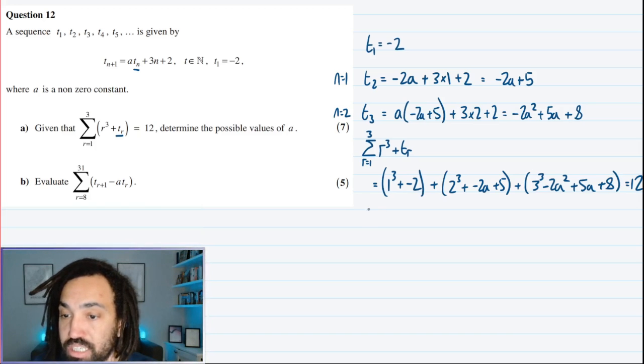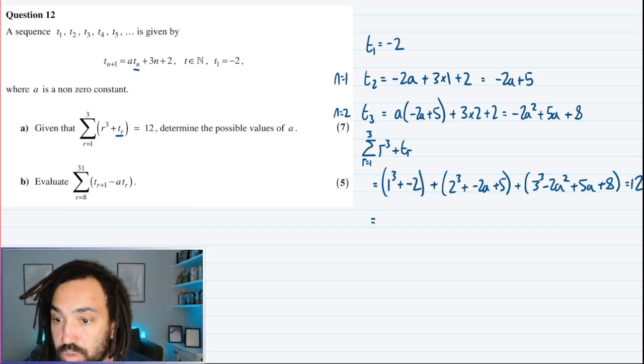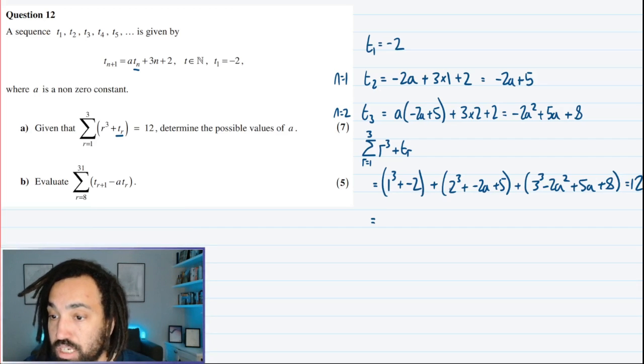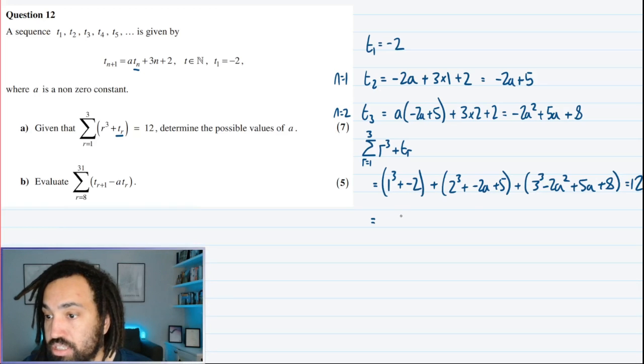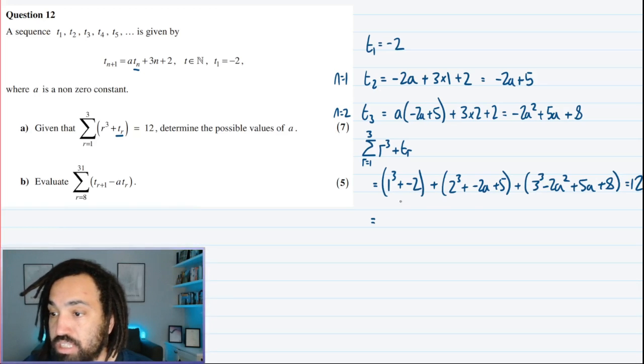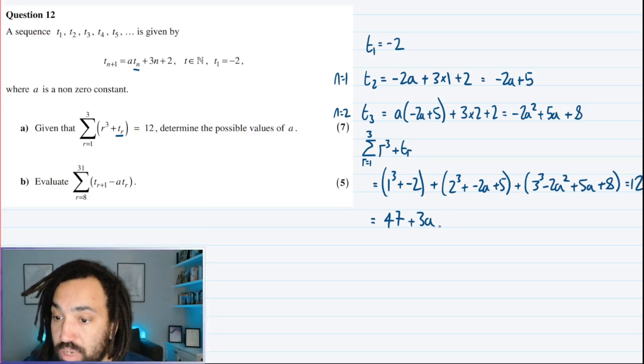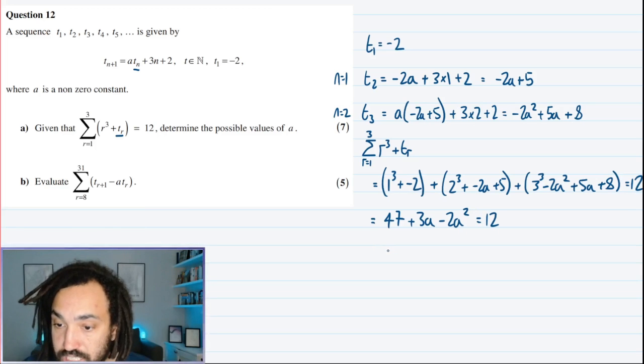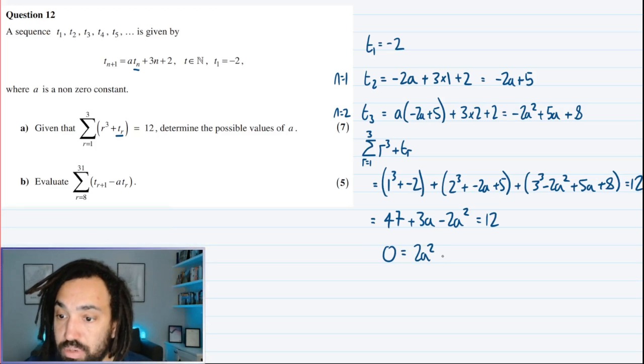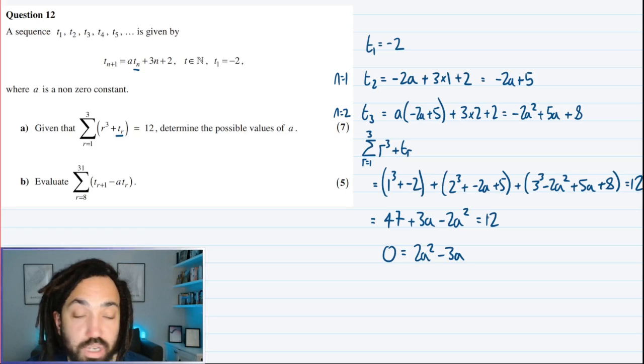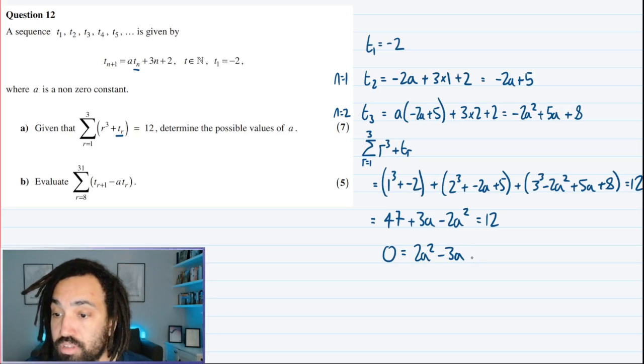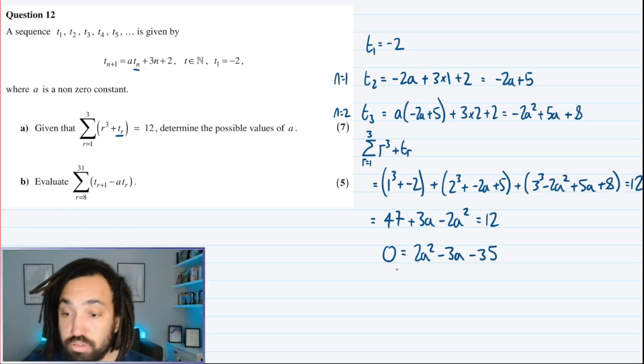We need to add this all up. So we've got 1 minus 2 is minus 1, plus 8 is 7, plus 5 is 12, plus 27 is 39, and then plus 8 is 47. So we've got 47. And for a's, we've got minus 2a plus 5a, so that is plus 3a. And for a squared, we've got minus 2a squared, and that is all equal to 12. So let's bring it all over to the right hand side. So we get a positive 2a squared, minus 3a, and then we need to minus 47 from 12, which gives me minus 35. That looks solvable.